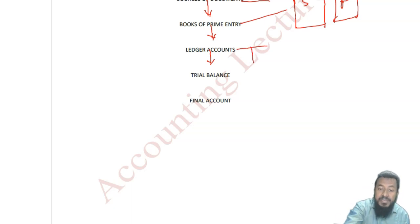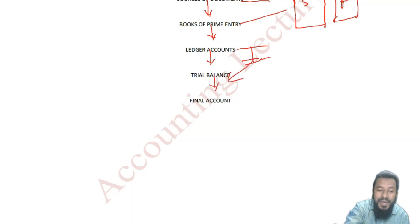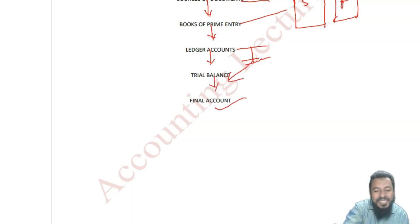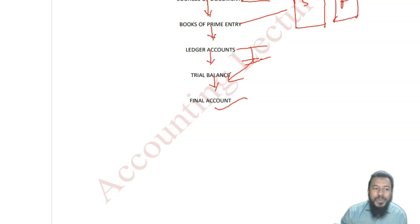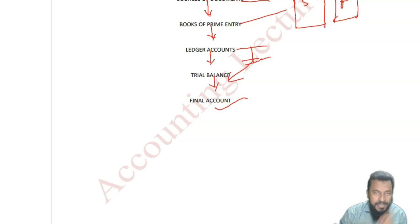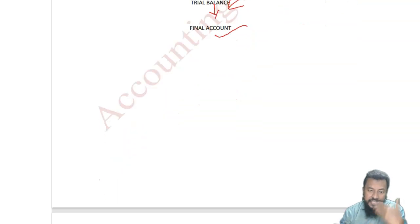From ledger accounts, the balance — carried down, brought down — you prepare trial balance. And then from trial balance, you make final accounts, which we also call financial statements. That is your accounting stages.